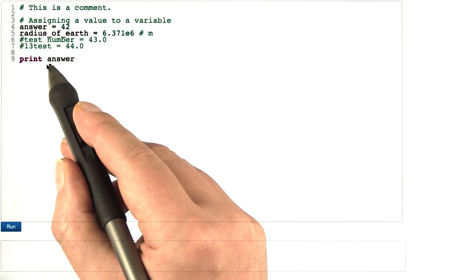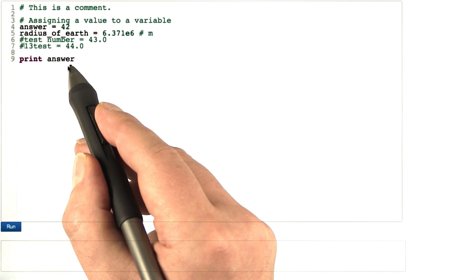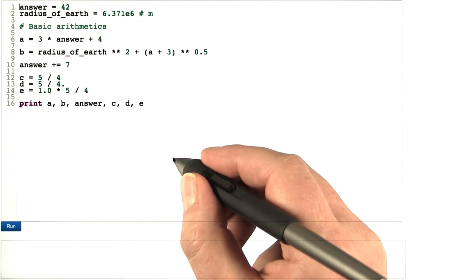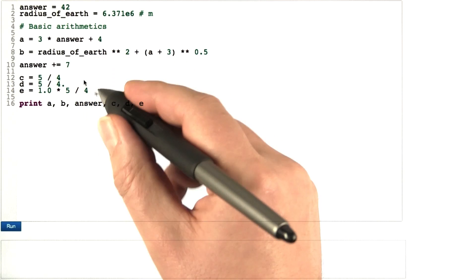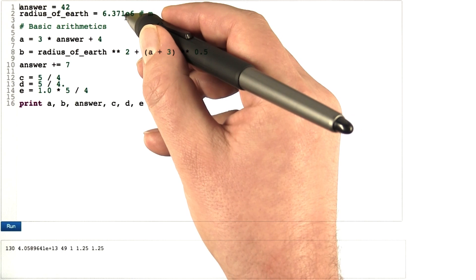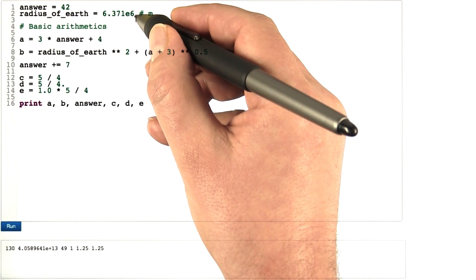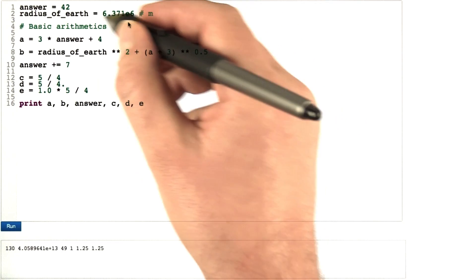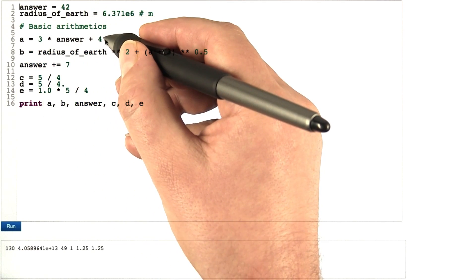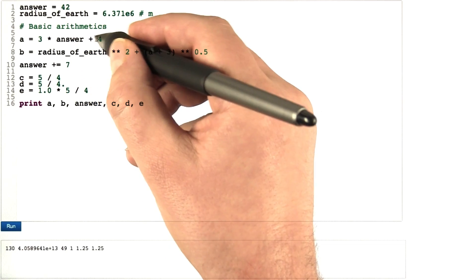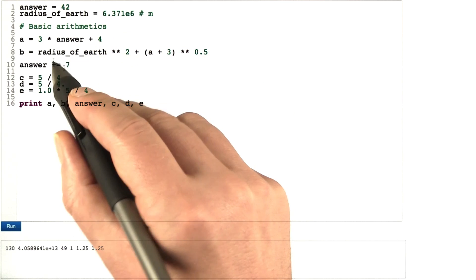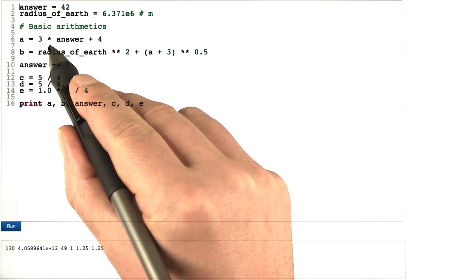The print command prints out what you have given after it — very simple. If you want to specify more things, simply use commas. This now shows some basic arithmetic. I'll run it first to discuss the results. 42 is assigned to answer, and 6.37-something times 10 to the sixth is assigned to radius_of_earth. Now we do some computation: 3 times answer plus 4, and the result is assigned to a variable called 'a'.